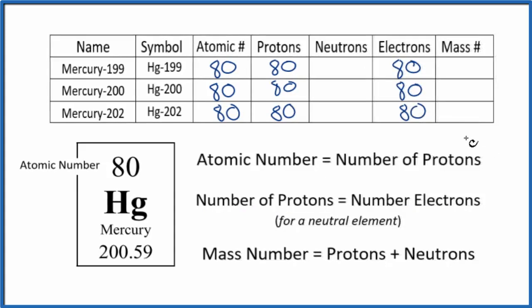So the only thing that's different for these isotopes of mercury is the number of neutrons and then the mass number. We can find the mass number if we're given this hyphen notation here. Mercury-199 means the mass number is 199, Mercury-200 would be 200, and Mercury-202, that's the mass number. So now we have the mass number, and the mass number equals protons plus neutrons.